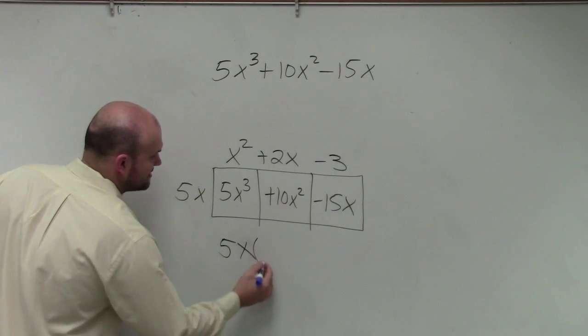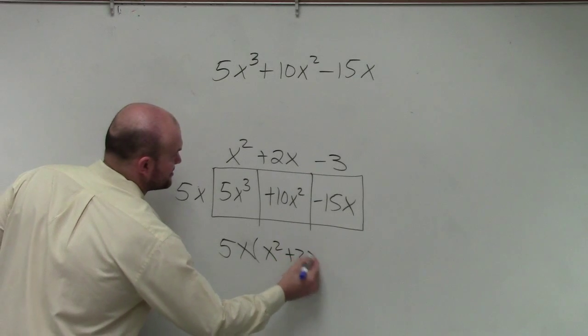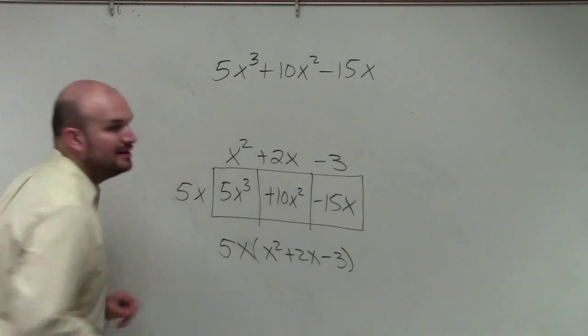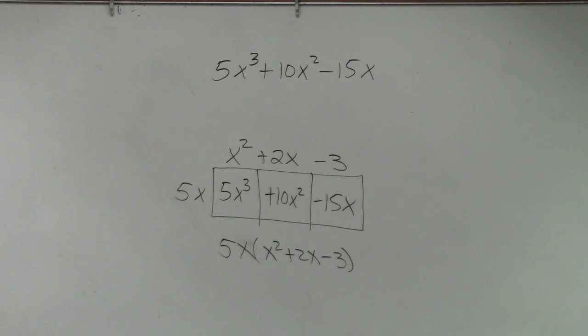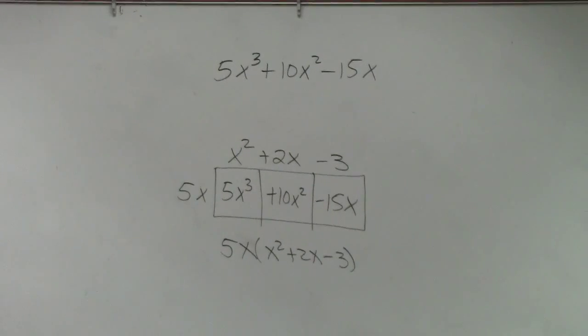So your answer is 5x times x squared plus 2x minus 3. Now, getting back to what we talked about, first class period. I could say.